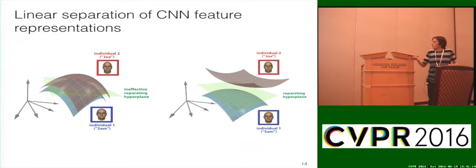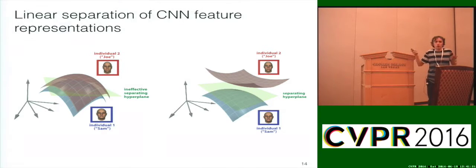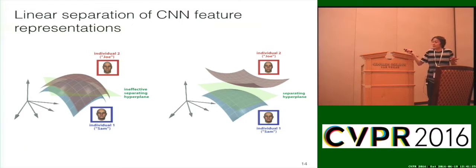Deep learning supposedly solves the tangled representation problem. But for open set recognition, does this solve the problem? Does this mean we should cancel the tutorial?